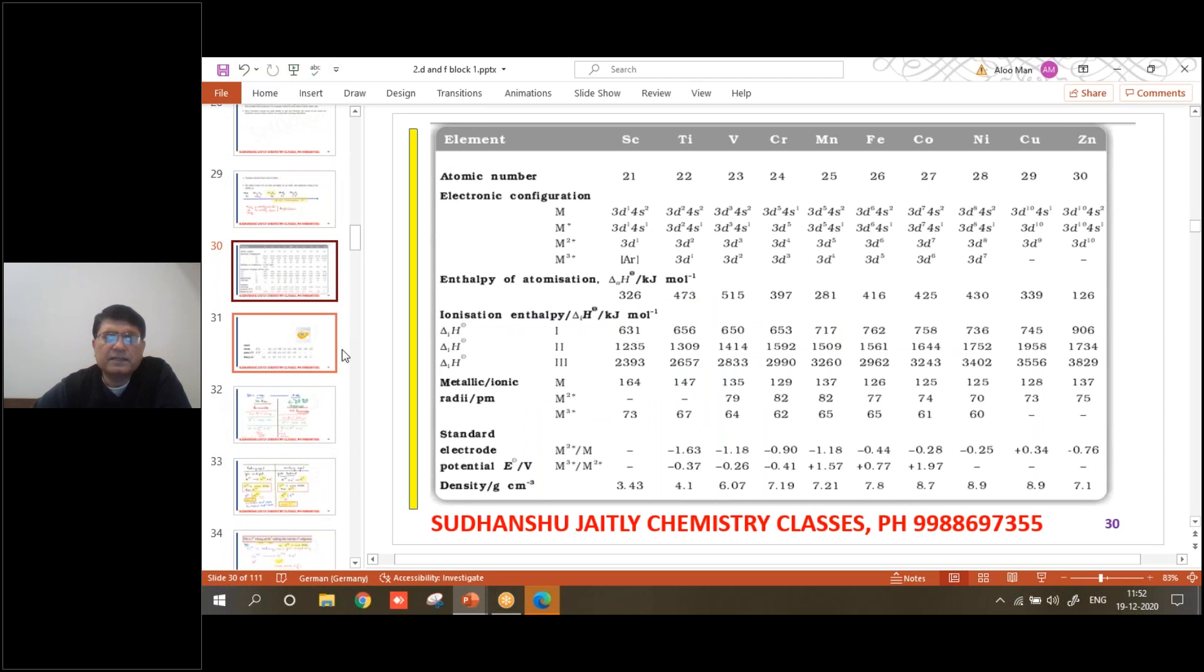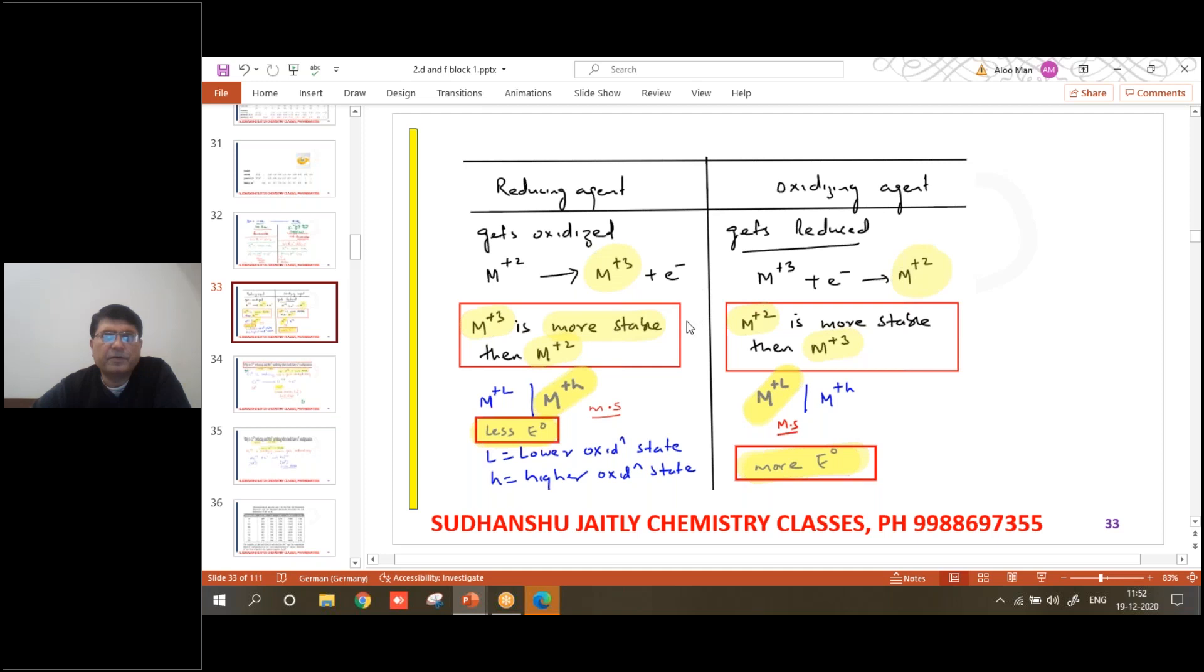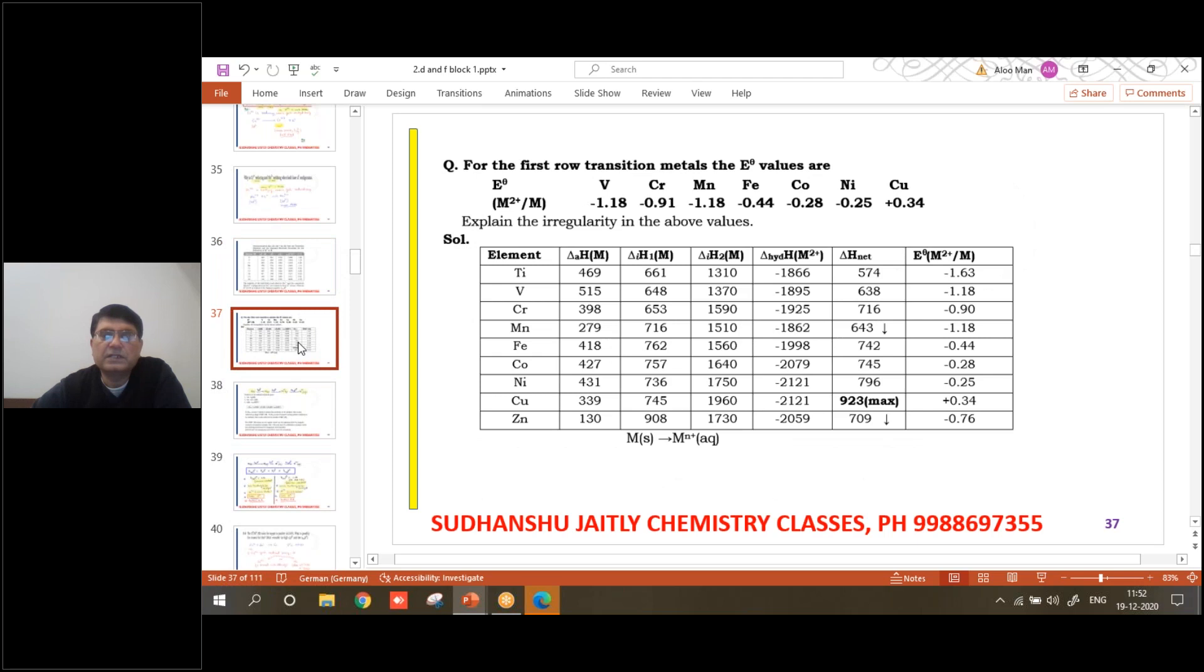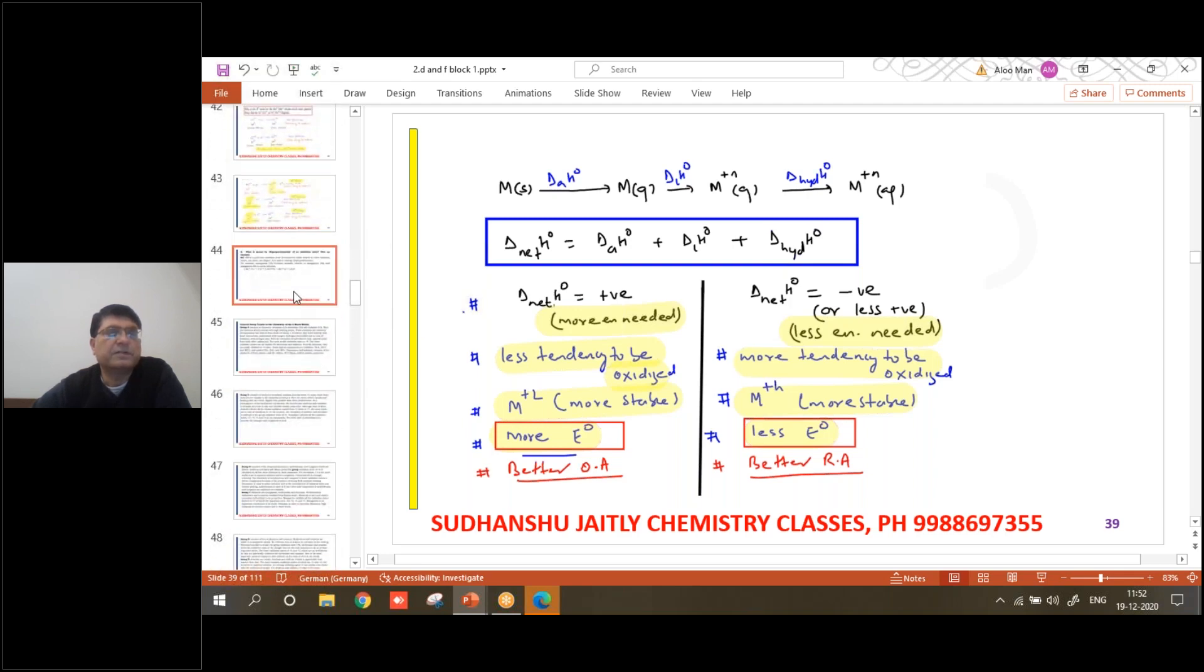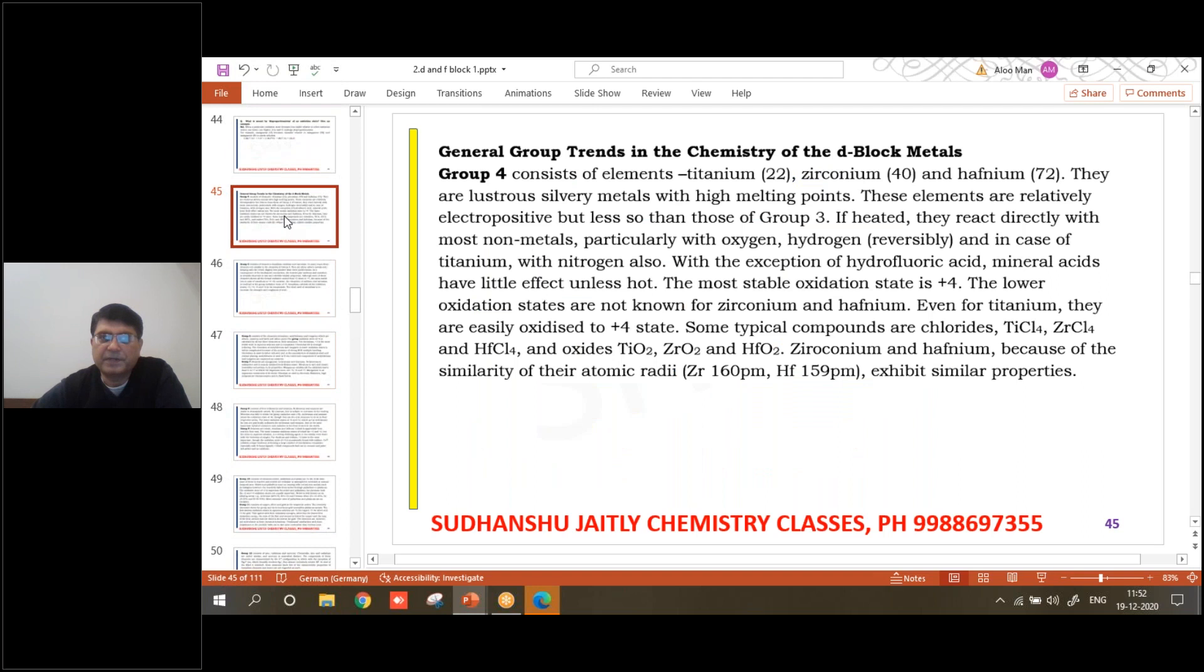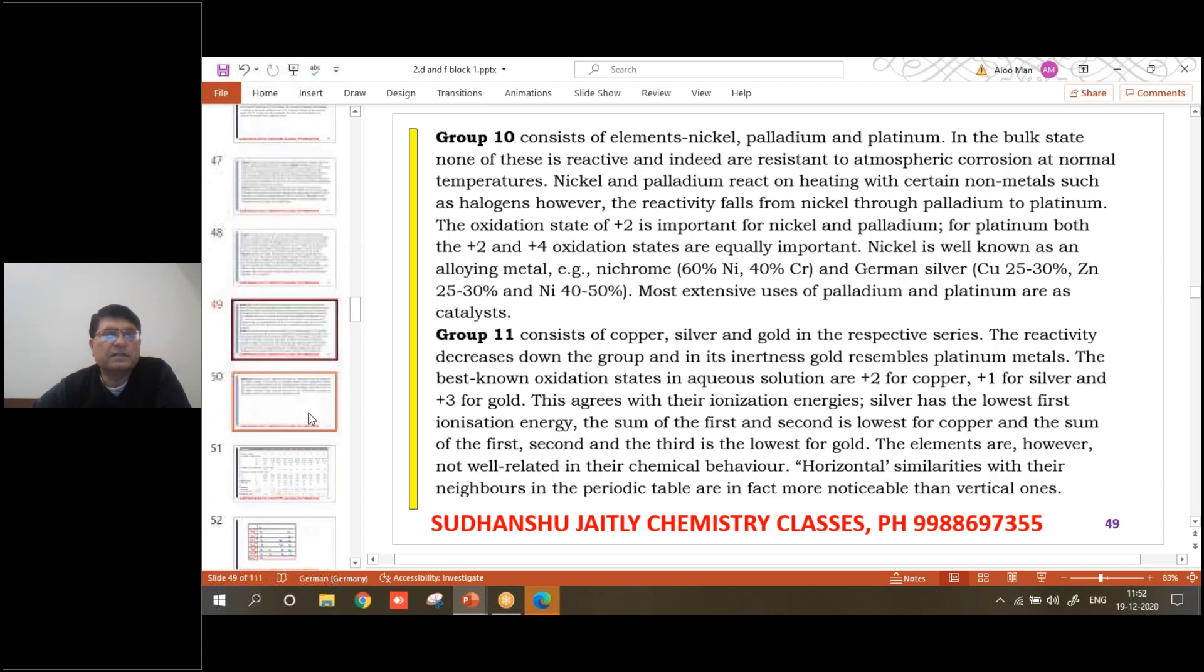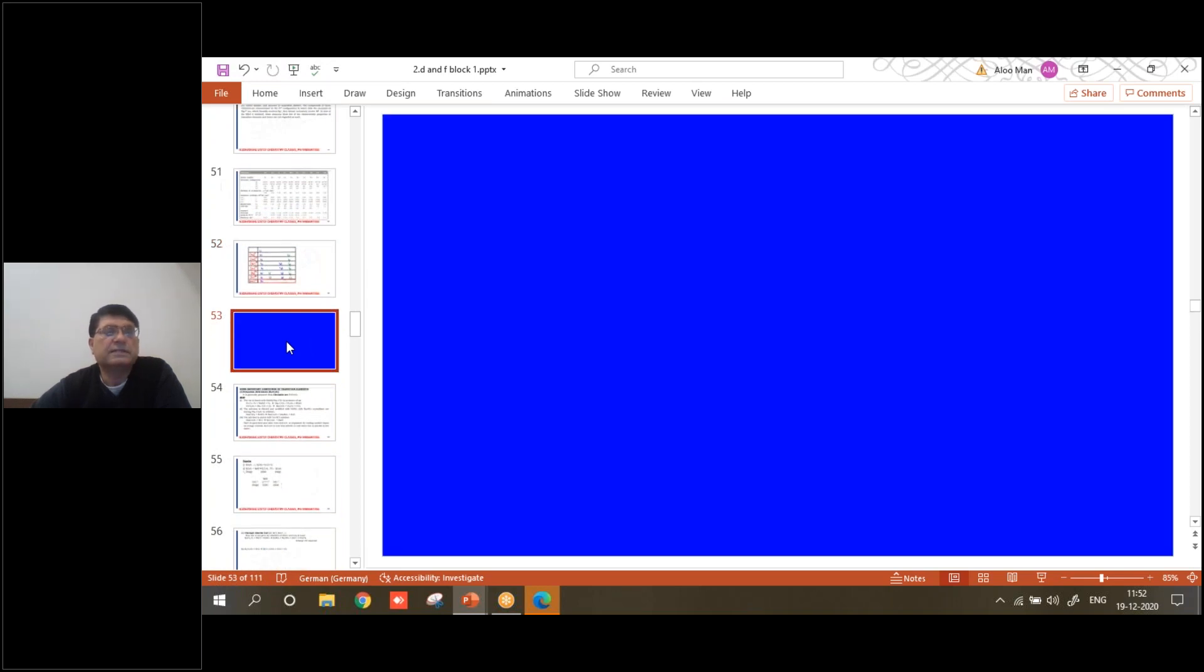We discussed why something is going to have minus reduction potential and why something has higher reduction potential. It was an important discussion. Not everybody can understand, but you have already understood it and that's very good. You will be finding questions based upon that. People will be going for rote learning. If you just try to understand what is the concept behind it, nobody can beat you. The aufbau principle is going to be the key. Now let's move ahead.